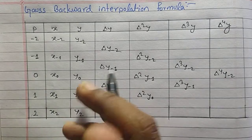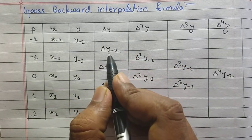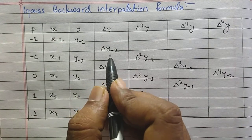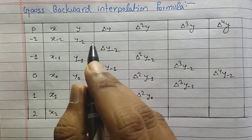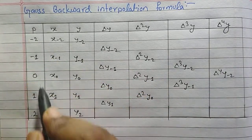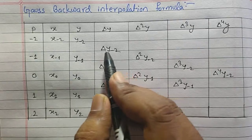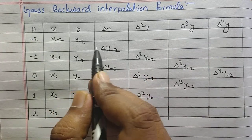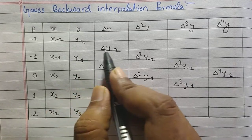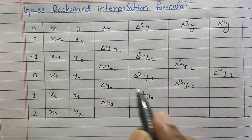So without wasting time let's begin the video. These are the members which represent the backward difference, whose method of finding is similar to what we have done in Newton's backward difference. You can check out that video also. This p represents the term — so this row becomes x₋₂, y₋₂, Δy₋₂. I will further explain why the difference members are written diagonally, and it will be more clear from the example in this video.